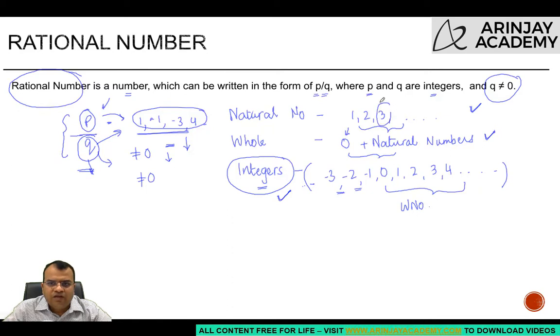If you pick any natural number, 3, we can write 3 as 3 upon 1, right? If I compare this with p upon q, what is the value of p? 3. What is the value of q? 1. Is p an integer? Yes. Is q an integer? Yes. Is q equal to 0? No. This means 3 upon 1 is also a rational number.